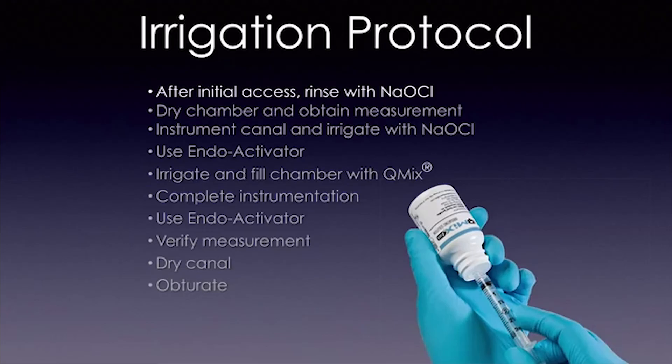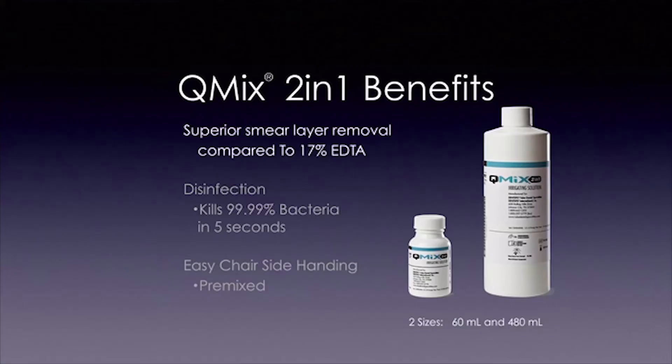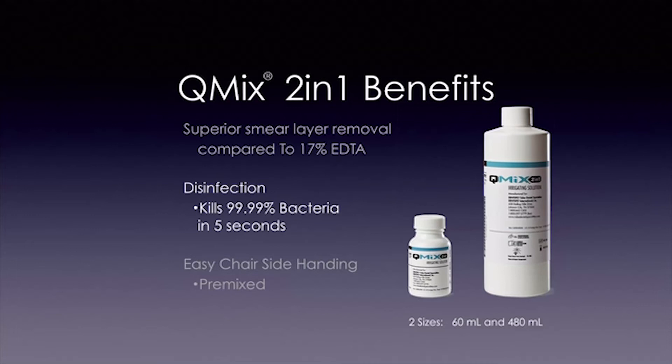Our irrigation protocol: after initial access, irrigate with sodium hypochlorite, dry the chamber, and obtain a measurement. Instrument the canal and irrigate with sodium hypochlorite. Use the EndoActivator, then irrigate with QMix, complete the instrumentation, and use the EndoActivator with QMix. Verify measurements, dry the canal, and obturate. The benefits of QMix are superior smear layer removal compared to 17% EDTA, incredible disinfection with 99.99% of E. faecalis killed within 5 seconds of exposure, and very easy chairside handling.